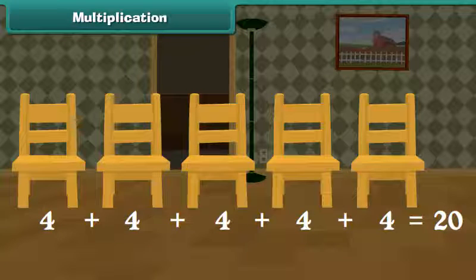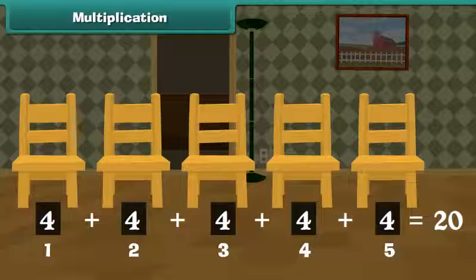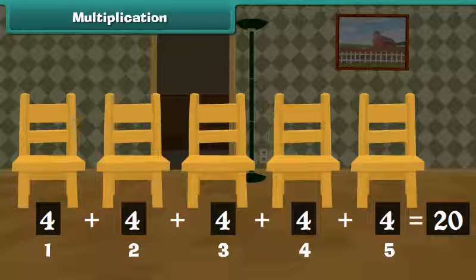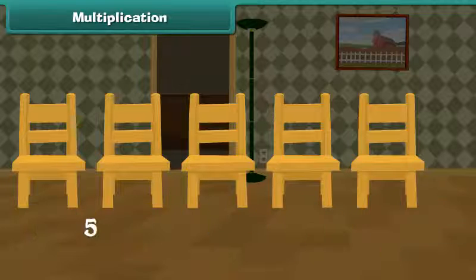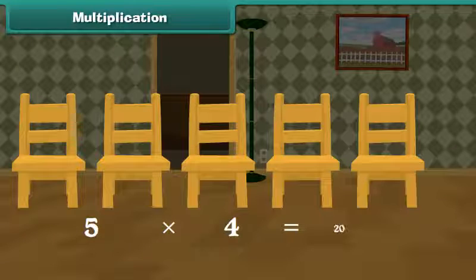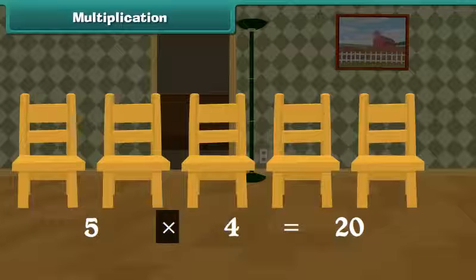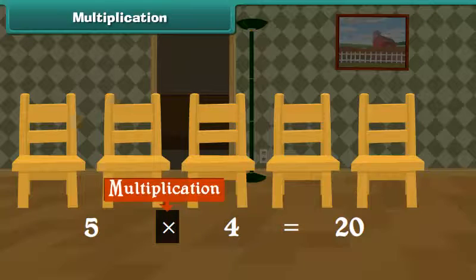In other words, 5 times 4 is 20. We can write it as 5 × 4 is equal to 20. The cross is the sign for multiplication.